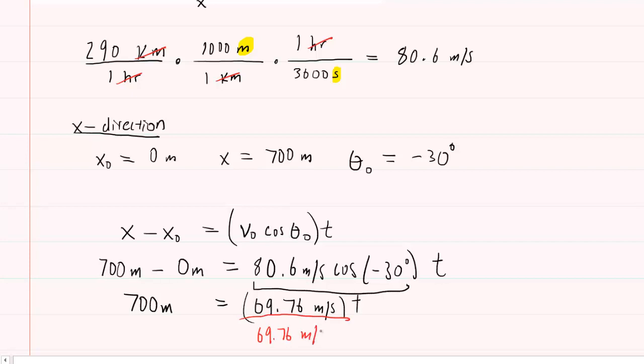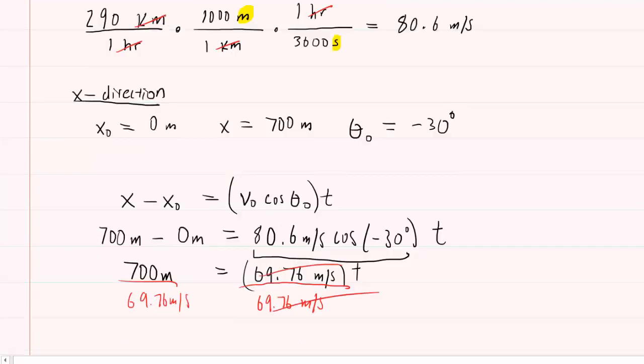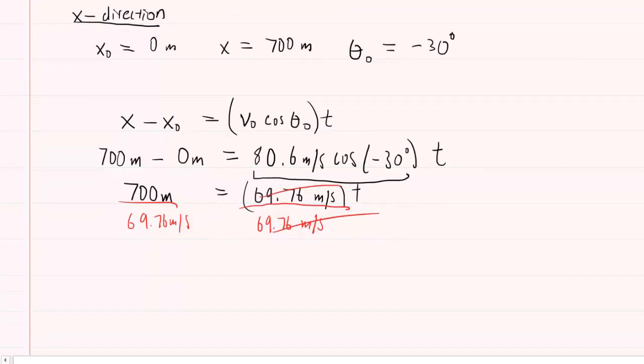So now we can actually solve for the amount of time the package is in the air by dividing both sides by the 69.76 meters per second so that it cancels out on the right-hand side. The left-hand side becomes 10.0 seconds approximately. So the package is in the air for 10 seconds, and this is the correct answer to part A.